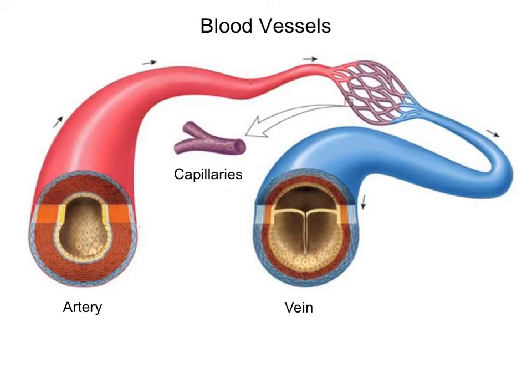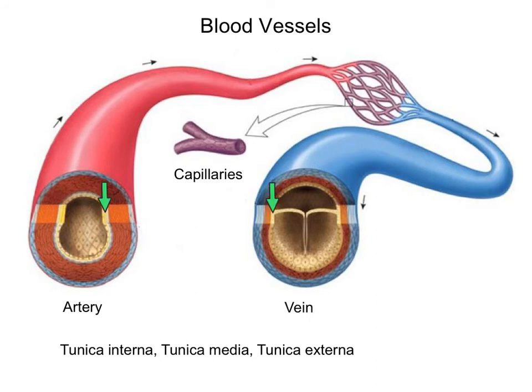Now going back and looking at the artery and vein there are distinctive differences between the two types of blood vessels and there are some commonalities. The commonalities that they have is that they have three different layers. The inner layer is called the tunica interna, the middle layer is called the tunica media, and the outer layer is called the tunica externa. The tunica interna is the inner lining of the blood vessels and is made up of epithelial tissue. The tunica media is made up of smooth muscle for the dilation and constriction of blood vessels. And finally the tunica externa is the outer covering of the blood vessels, also made up of epithelial tissue.